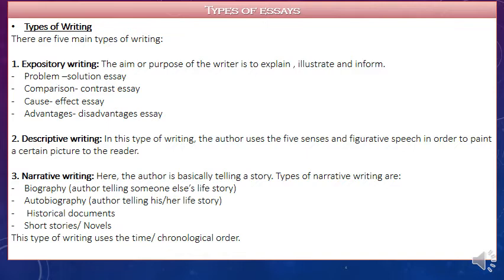The third kind of writing is narrative writing, which means telling a story. The types of narrative writing include biography, when the author tells someone else's life story; autobiography, when the author tells his or her own life story; historical documents; short stories; and novels. In narrative writing, we use time order or chronological order, writing events from the beginning to the middle to the end.